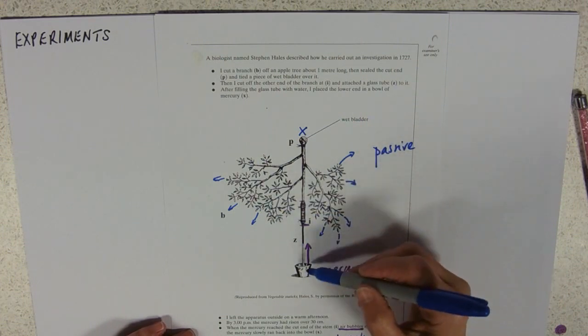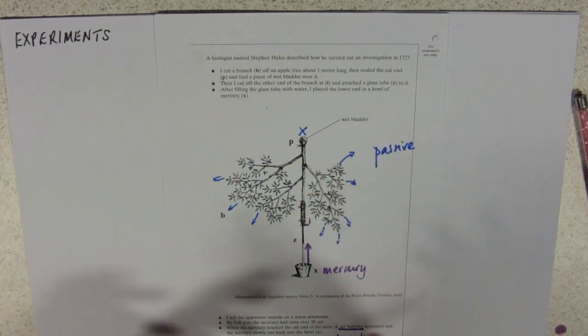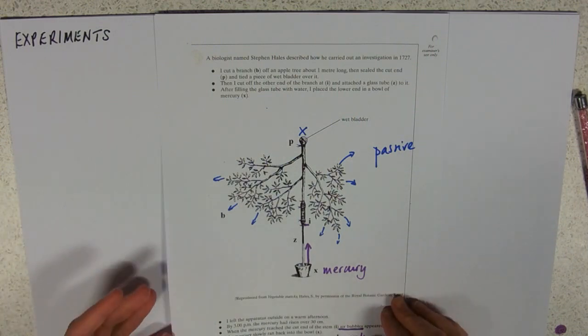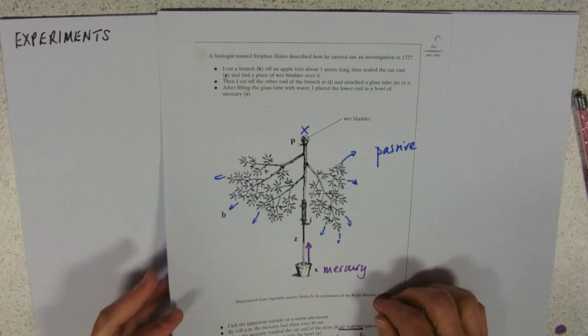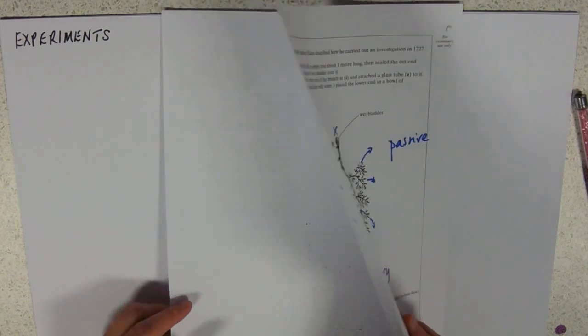And so, it was coming out of the leaves and pulling the water up. And so, it shows that it's passive, and it can go in either direction. Remember, it's just going through those very hollow cells. So, that's just sort of a couple of evidential experiments for you.